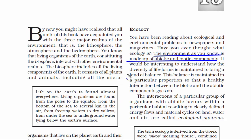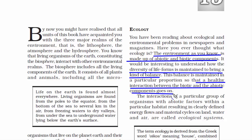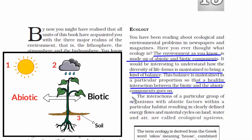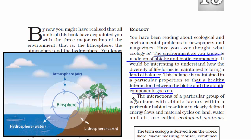The diversity of life forms is maintained through a healthy interaction between the biotic and the abiotic components. For example, a plant falls under the biotic component. In order to grow a plant, you need sunlight, water and soil — which fall under the abiotic component. All four domains of the environment need to interact with each other in such a way that it makes life possible on Earth.